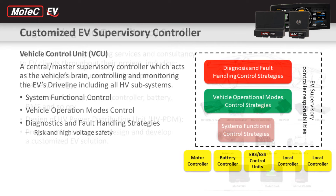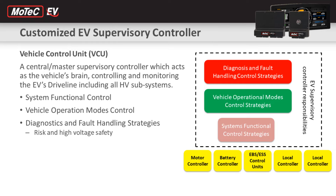The EV supervisory controller is the master controller in the vehicle that performs three major tasks. System functional control includes controlling each individual EV driveline subsystem and managing the functional relationships between them. High voltage line control and EV drivetrain torque mapping are examples of the system functional control.